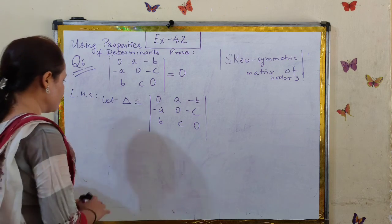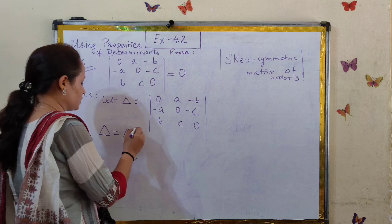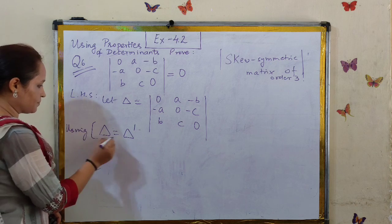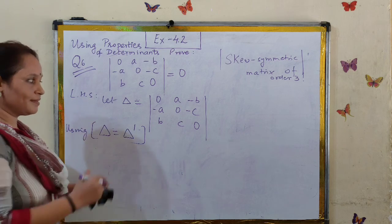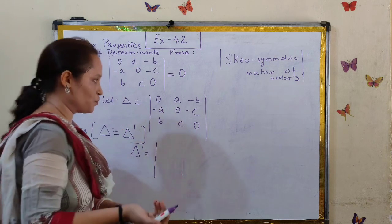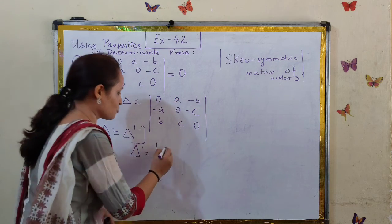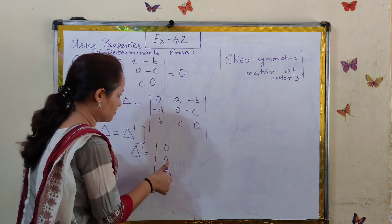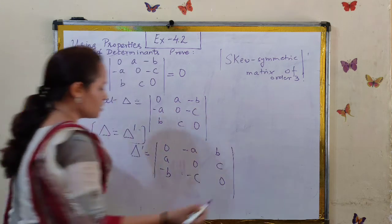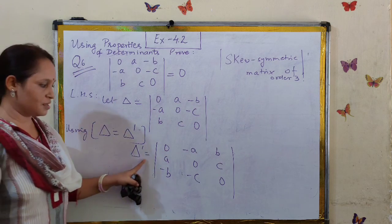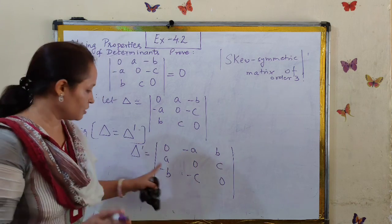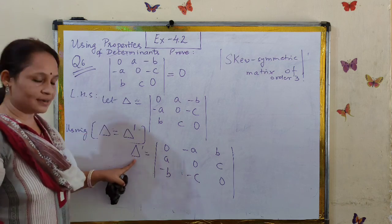The first property, if you recall, is that the value of the determinant and the value of the determinant of its transpose are the same. Using this property, we can take the transpose of the determinant. Rows are changed into columns — or columns into rows, same thing. So 0, A, minus B becomes the first column; minus A, 0, minus C becomes the second column; B, C, 0 becomes the third column. After taking the transpose, these are the entries of the new determinant. The entries differ, but the value of the determinant remains the same — delta and delta transpose are equal.